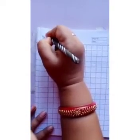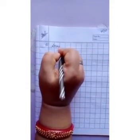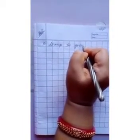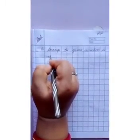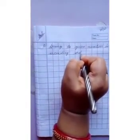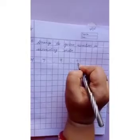Write date and write HW. We have to write the same question here: arrange the given numbers in ascending order.